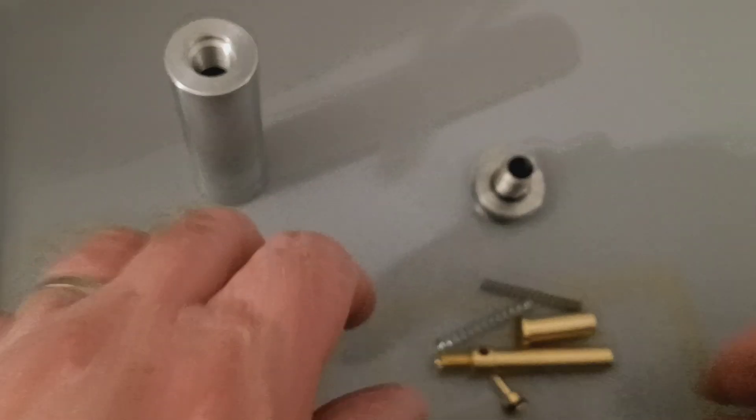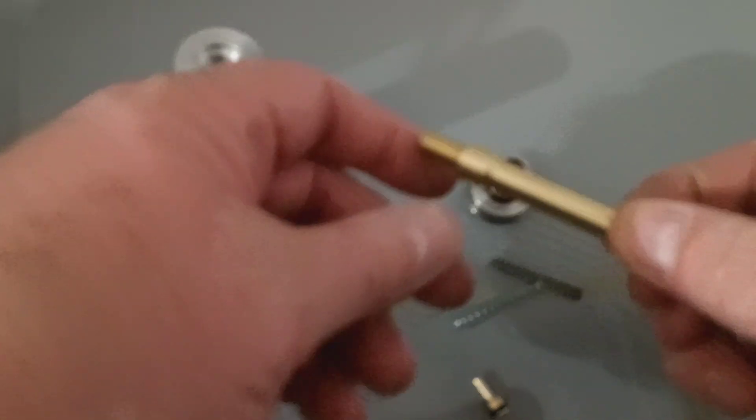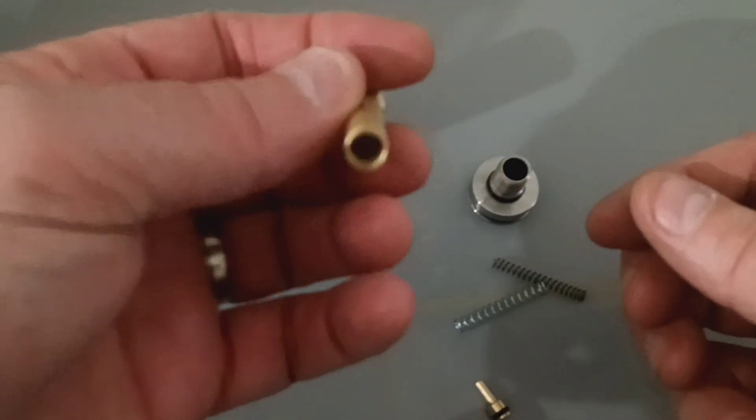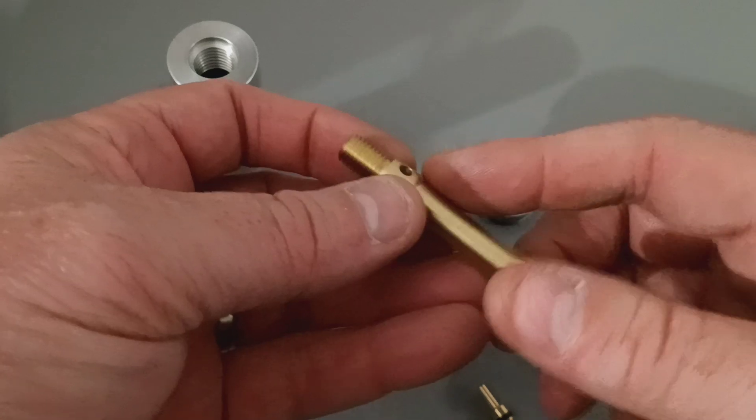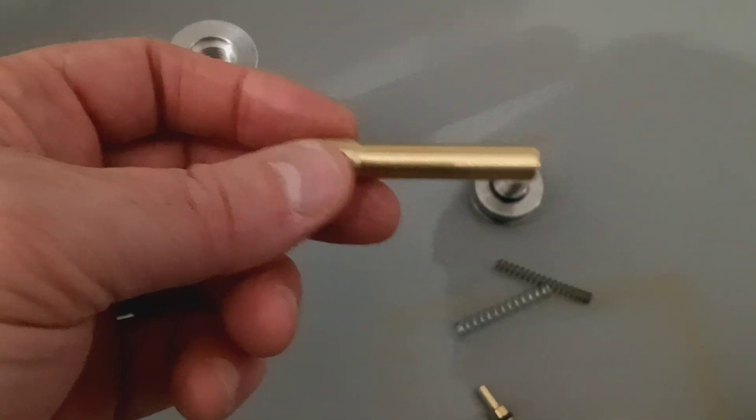So here's how it goes together. This stem does not go through all the way. This is the inlet side. And this is the side that will remain at atmosphere.